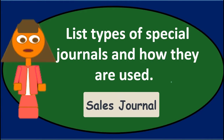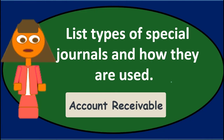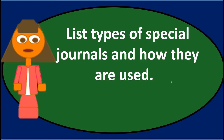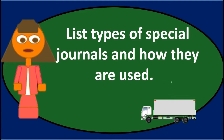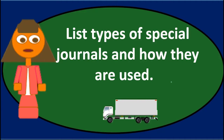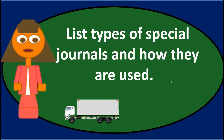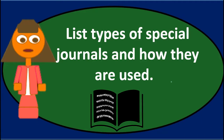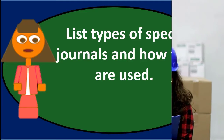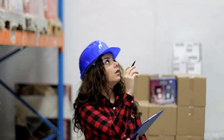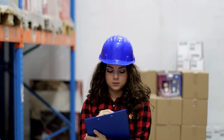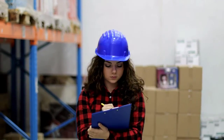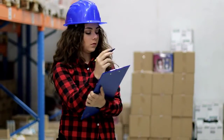The sales journal is really more like an accounts receivable journal, meaning we made a sale on account. If it's a service company or a company on a periodic system, we just need one column to record a debit to accounts receivable and a credit to sales or revenue. If we're on a perpetual inventory system and we're a merchandising company, we'll also need a column for the cost of goods sold debit and a related decrease in inventory.